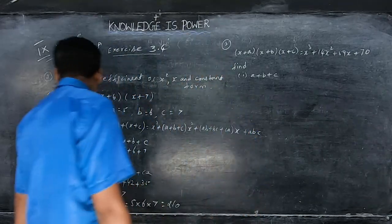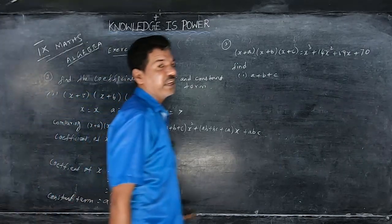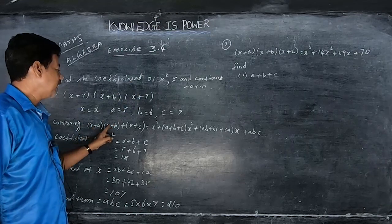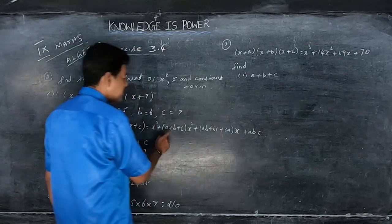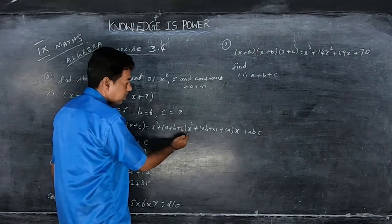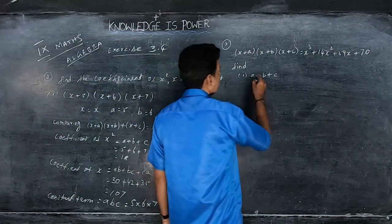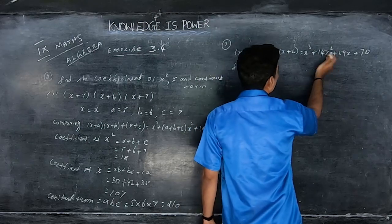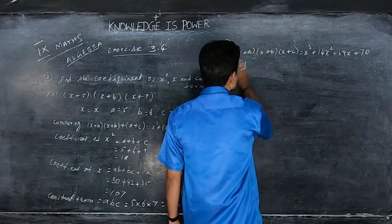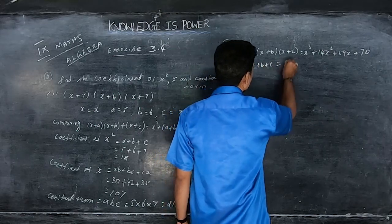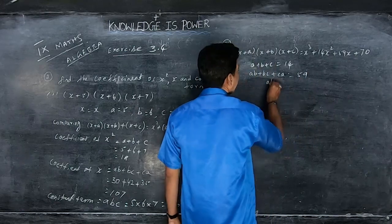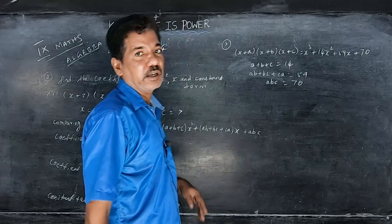Using the same formula, comparing coefficients: a+b+c equals the coefficient of x square, which is 14. So a+b+c = 14. Also, ab+bc+ca = 59, and abc = 70. Remember these three results — they will be used in the next sub-questions.